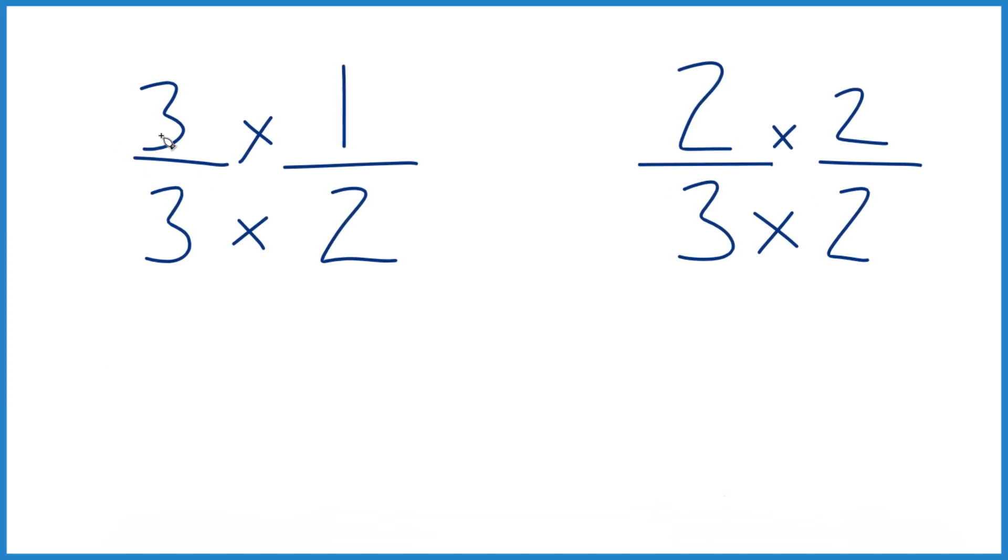Now when we multiply, I get three times one is three, three times two is six, and three-sixths, that's equivalent. Same value as one-half. And over here we get four-sixths, which is the same as two-thirds, equivalent fractions.